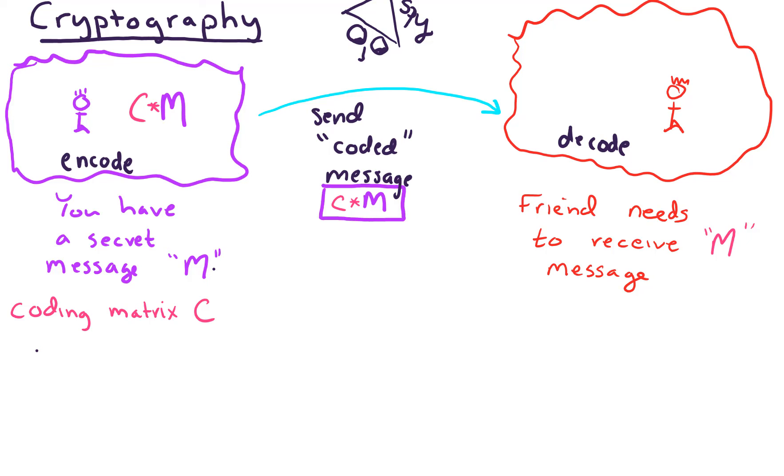So our friend over here will need to know what the coding matrix is, and the friend to decode the matrix will multiply C inverse times this coded message. And when we multiply C inverse times C times M, the C inverse and the C will cancel out, and that will just retrieve message M, which is what we want.